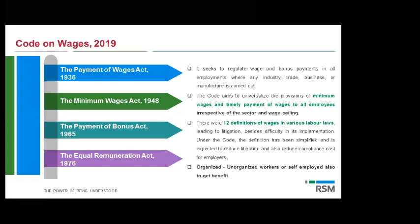In the earlier regulations, because there were different acts, there were a host of different definitions for various terms including the term 'wages' — there were 12 different definitions. Now since everything is brought into a single code, we have a single definition, which is going to save a lot of time and energy on litigations, interpretations, and a host of issues that were connected with different definitions being there in the different regulations.